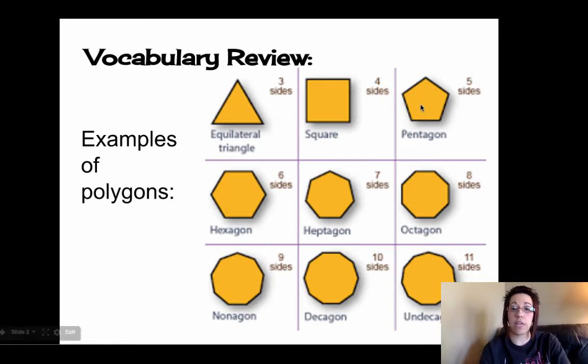A pentagon would have five sides. Hexagon has six sides. Heptagon has seven sides. Octagon has eight sides. We have nonagons that have nine sides. Decagons that have 10. Remember that prefix deca from our metric measurement unit.